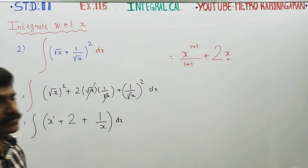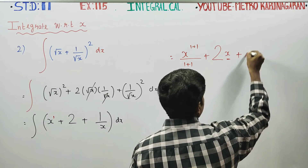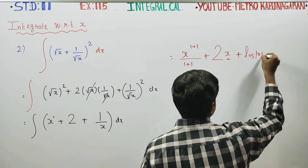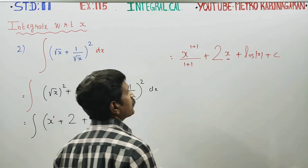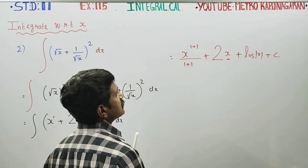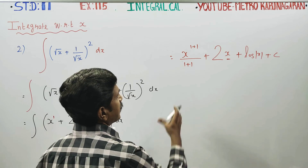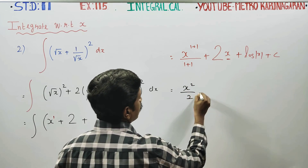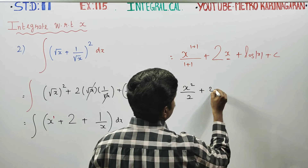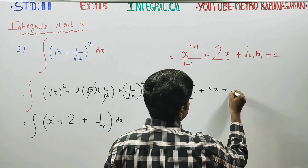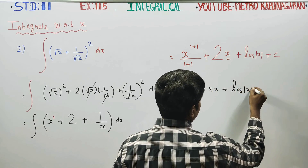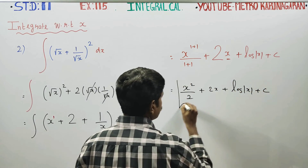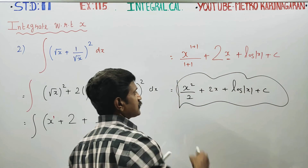1 by x uses the logarithm formula: logarithm of mod x plus c. If you simplify it, your answer will be x power 2 by 2 plus 2x plus logarithm of mod x plus c — that will be your final answer.